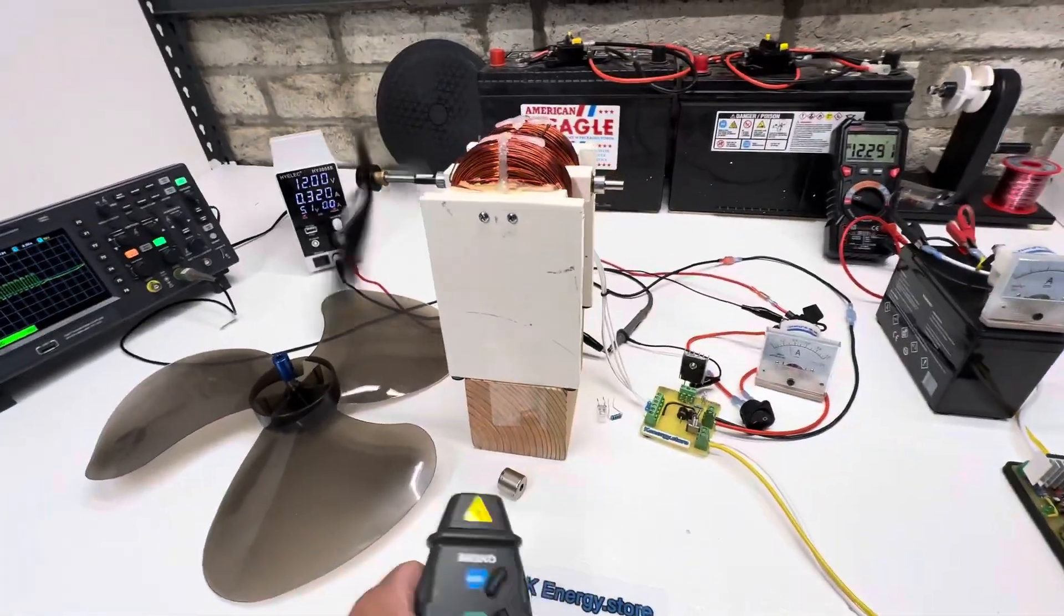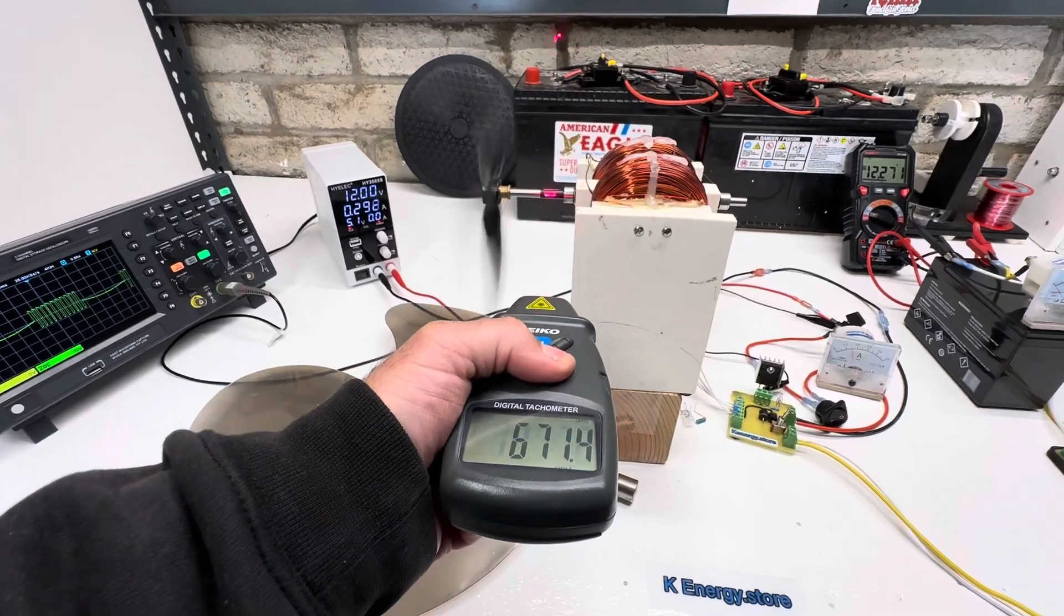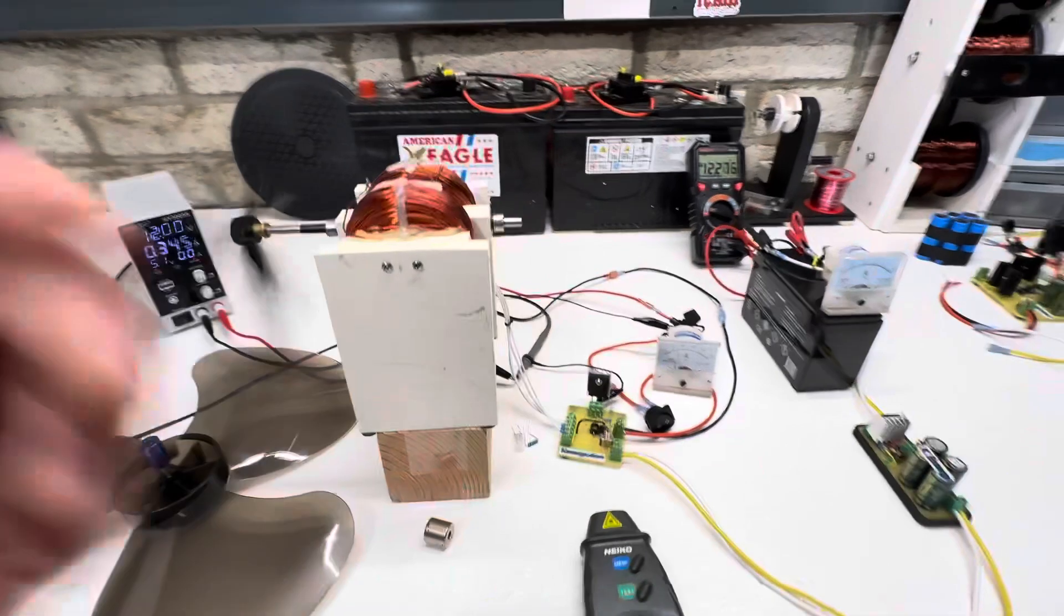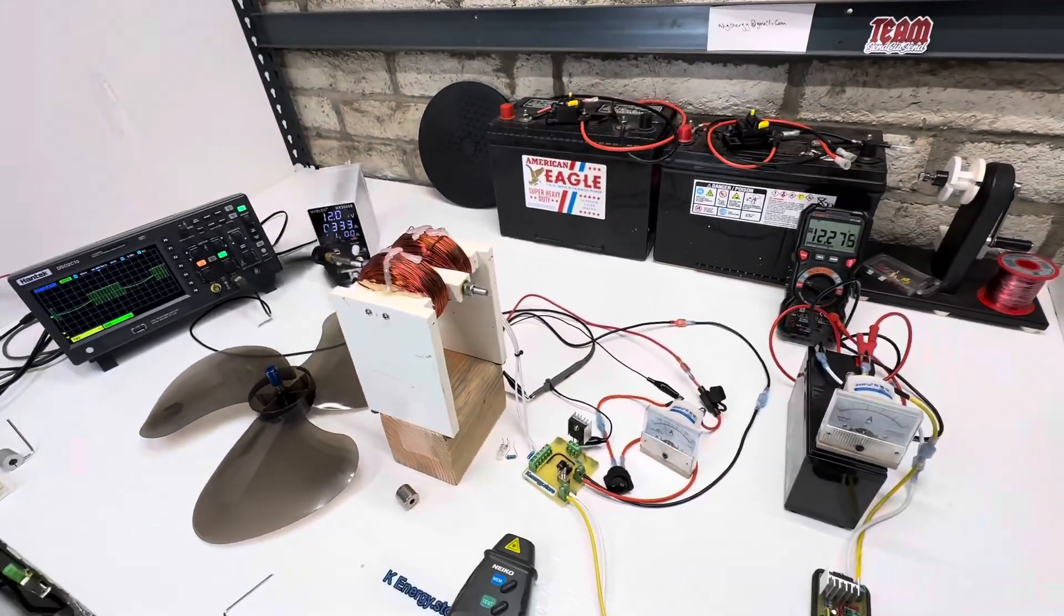Let's see what it was under generator mode. We're 671 in generator mode. Now we're going to put on this bigger fan.